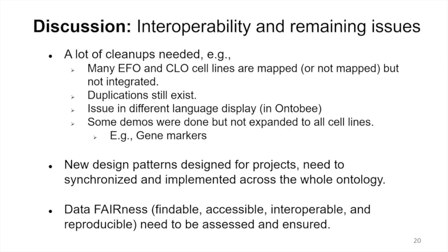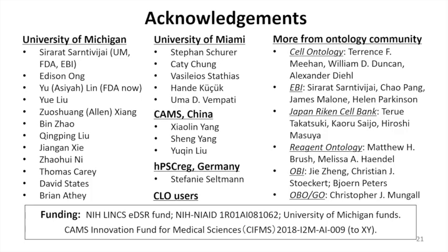Every time we want to develop something new, we want to make sure the high-level definition is solid and the design pattern is well-placed, so we can add many more terms. This is truly a worldwide collaboration among many groups — the cell type ontology, EBI, Japan Reagent, OBI, global disease ontology, and Stephanie's group in Germany. Thank you.